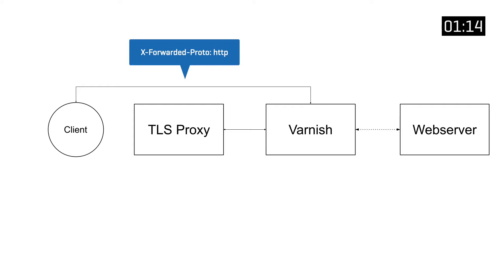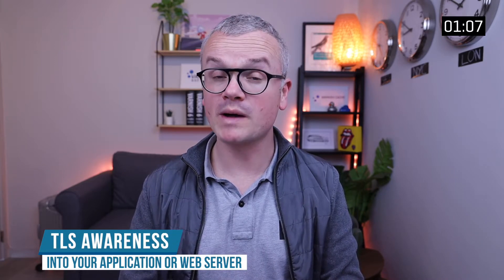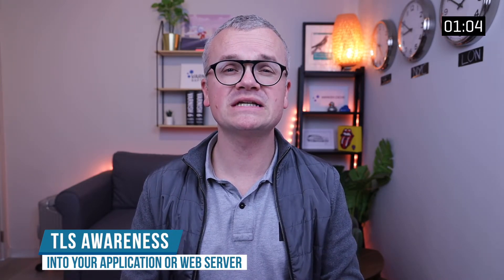However, if the client has a plain HTTP connection to Varnish, it will either be empty or HTTP. You need to build TLS awareness into your application or web server so that when a plain HTTP request is received, prior to doing the 301 redirect, you check the value of X-Forwarded-Proto. If it's set to HTTPS, no need to redirect. If it's not set or set to HTTP, then you can issue the redirect.